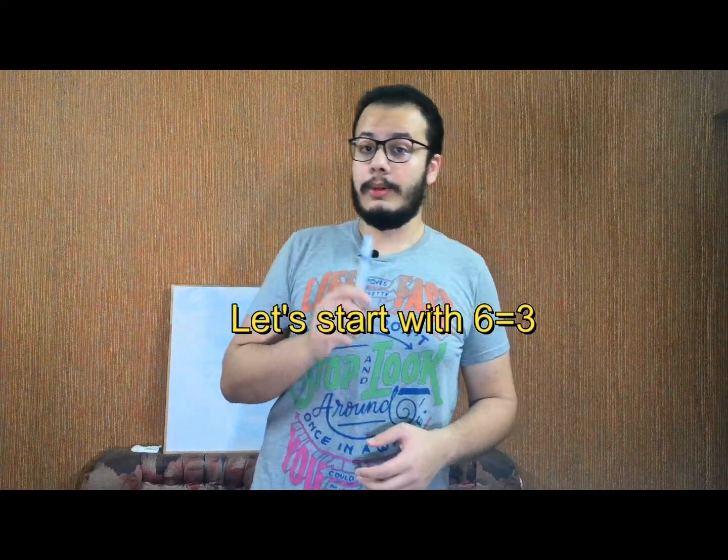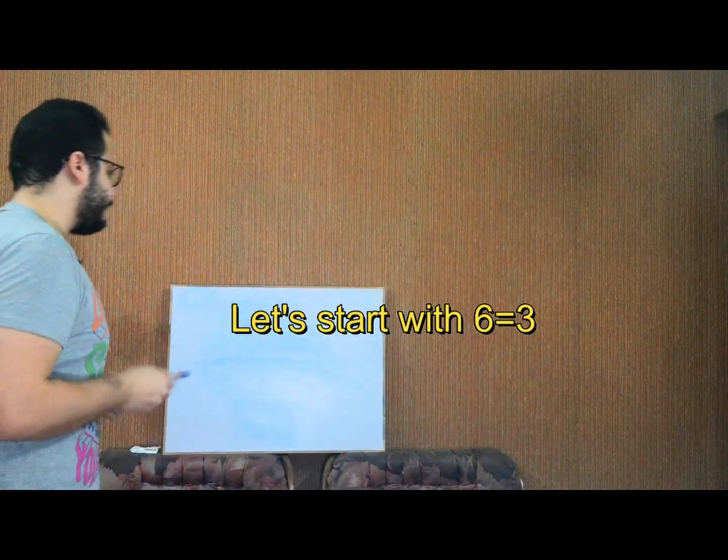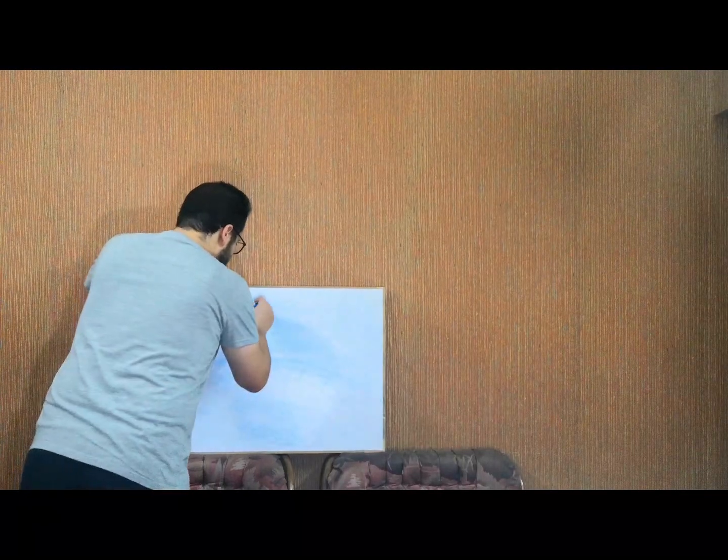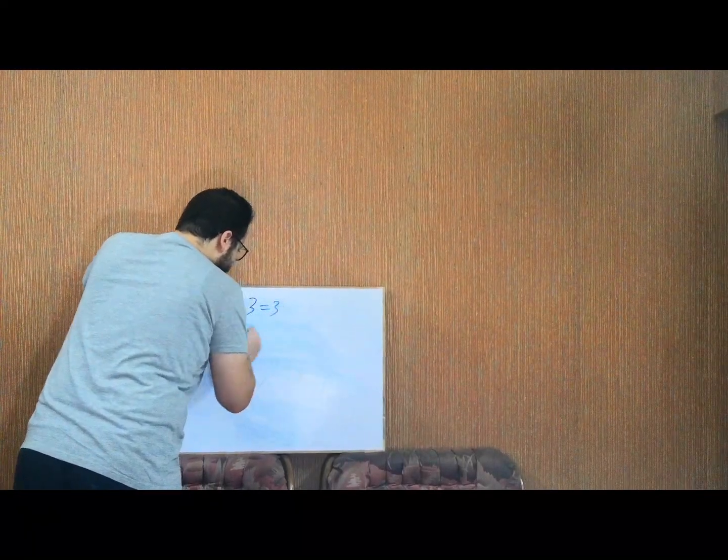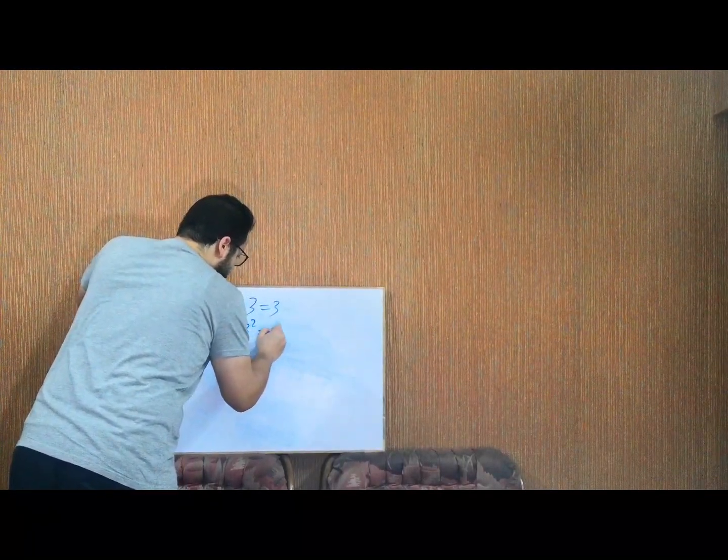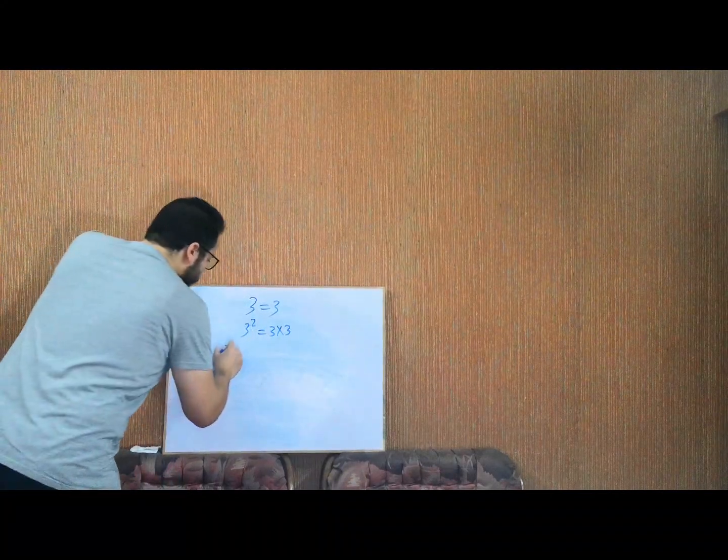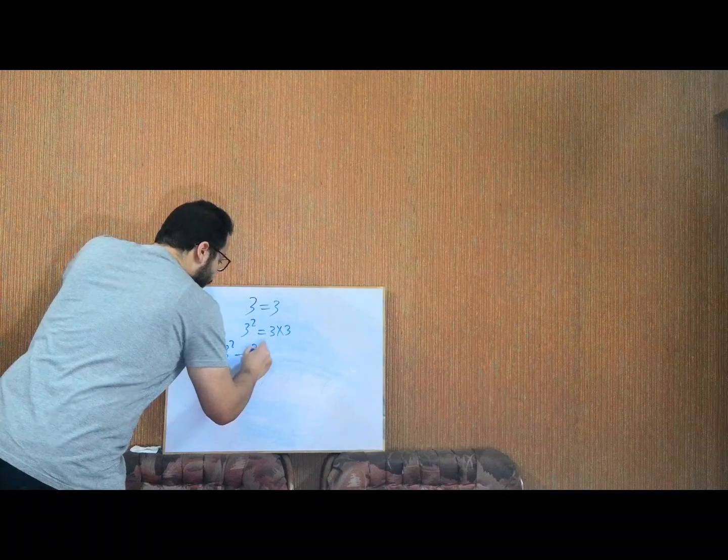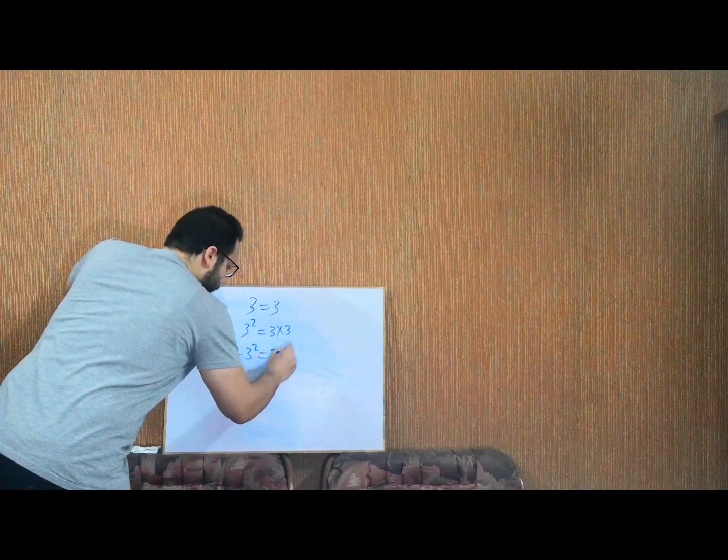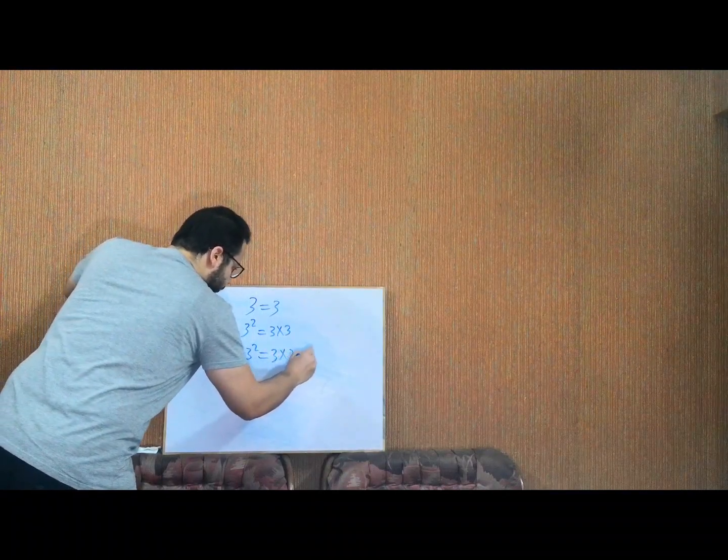Now we will go with 6 equals 3. We all know that 3 equals 3. 3 squared equals 3 times 3. 3² - 3² equals 3×3 - 3².